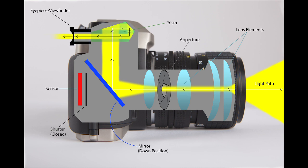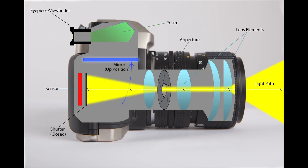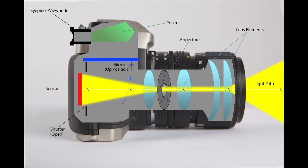When the shutter button is pressed, the reflex mirror is moved out of the way, allowing the light to reach the shutter, which then itself opens, allowing the light to hit the sensor or film inside the camera.